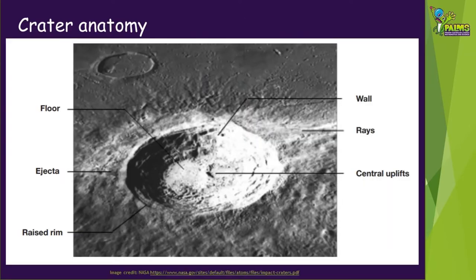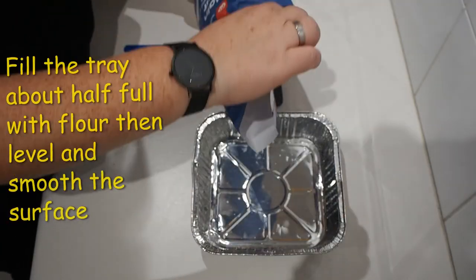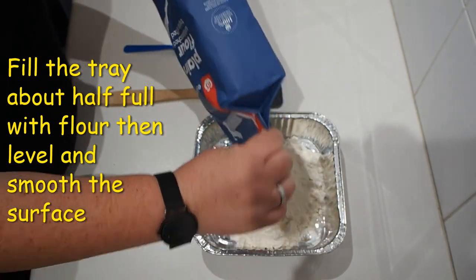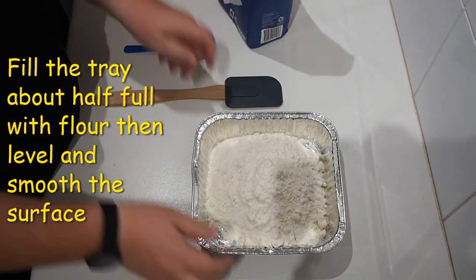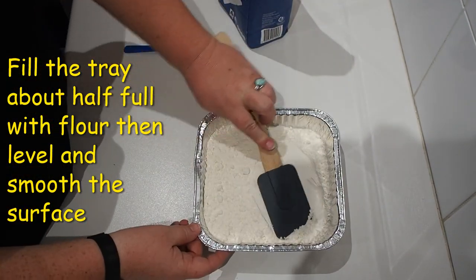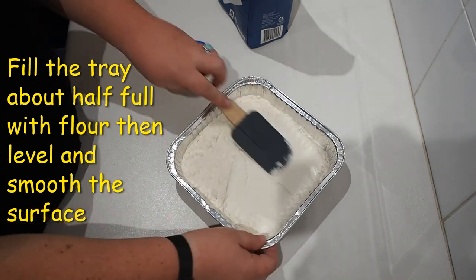This experiment will demonstrate some more information about the structure or anatomy of a crater. We'll be looking to see if we can observe any of the crater parts listed. You can find out more about crater anatomy by doing some research. To make our testing ground, start by filling the tray with flour about half way, then level and smooth the surface — try not to press down too much.